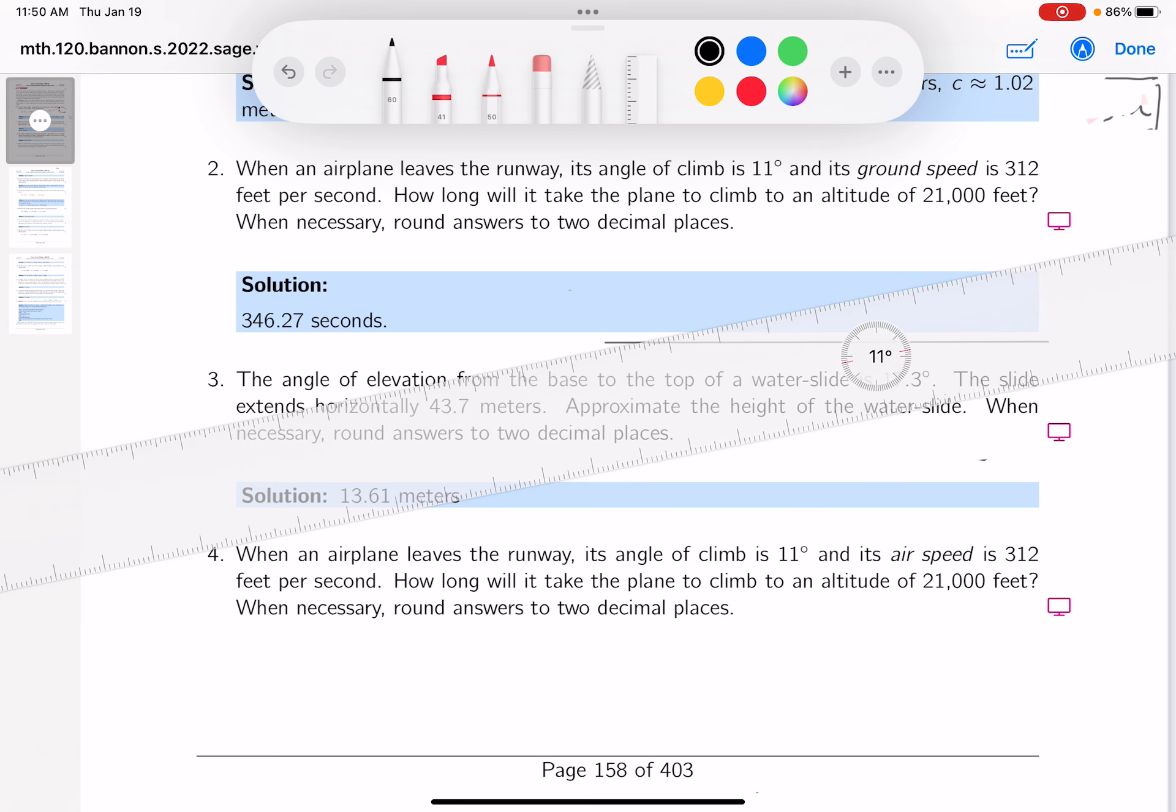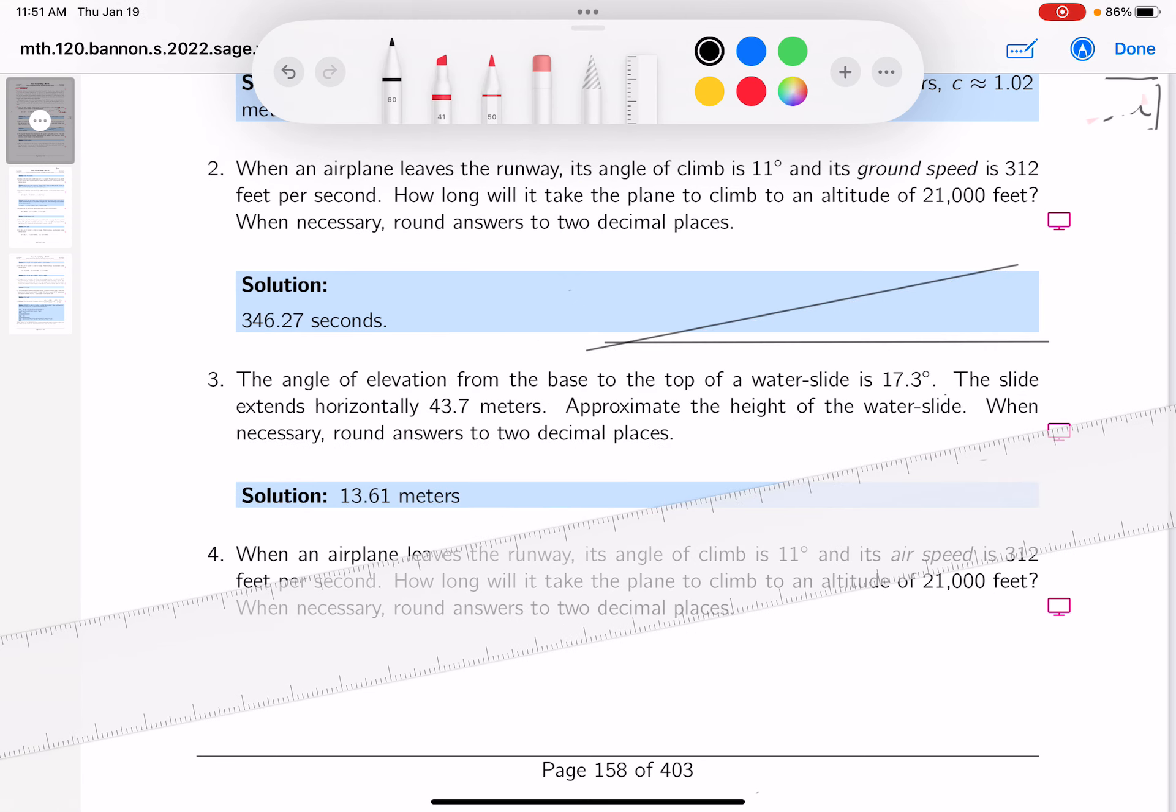I'm using a ruler to do that and the ruler also has a protractor built into it. A lot of rulers do, especially electronic rulers. So I put this over here and I want to tell you that this angle over here I measured to be approximately 11 degrees. So keep reading.